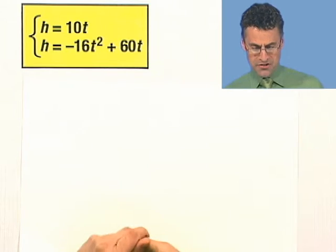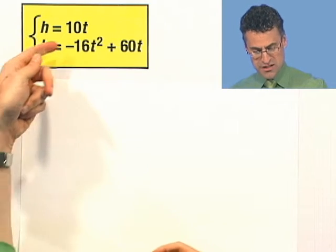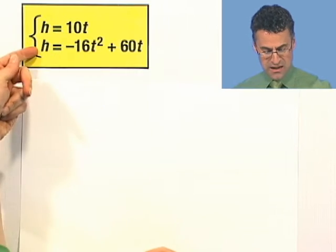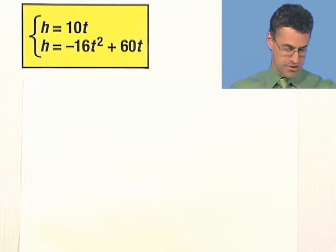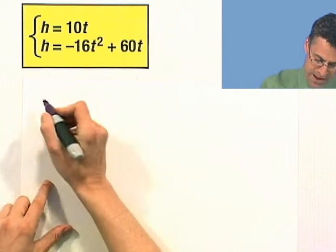How are we going to do this? Well, I'm just going to use substitution because if both of these things are h's, then I can take the 10t and insert it and replace it for this h and say 10t equals that. And then I got a quadratic equation. Let's give it the old math try.